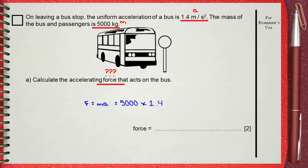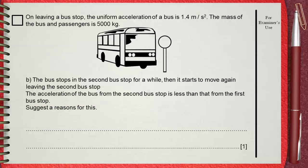M the mass is 5000. A the acceleration is 1.4. This gives the force of 7000 newtons. B, the bus stops at the second bus stop for a while,